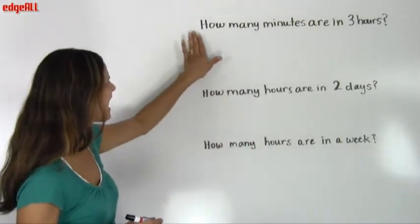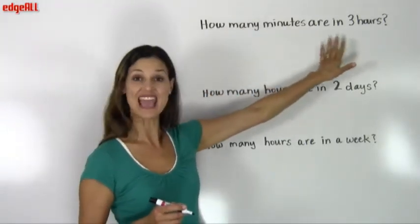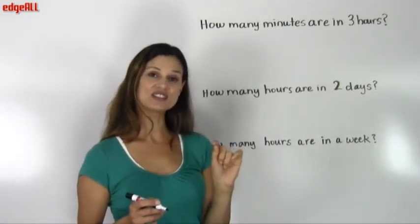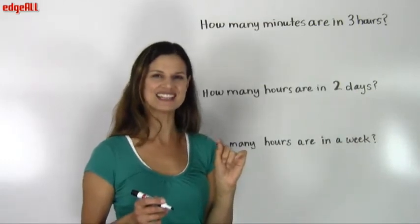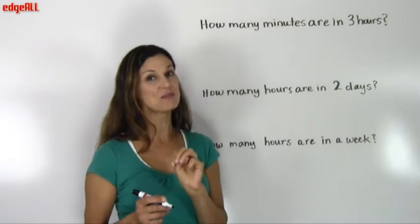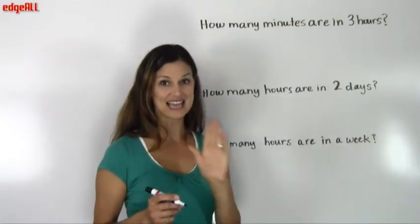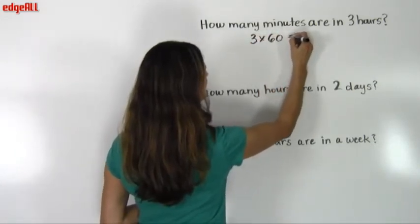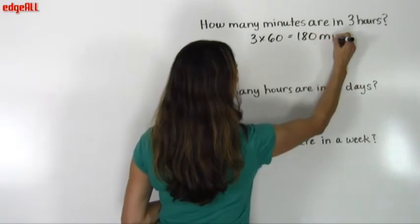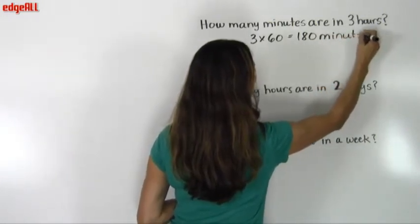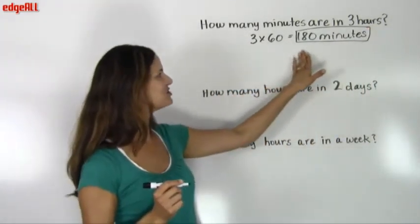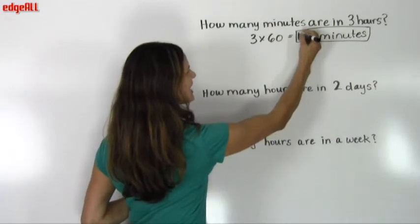In our first example, we are asked: how many minutes are in three hours? We know that in one hour there are sixty minutes. So in order to find out how many minutes there are in three hours, we multiply three times sixty. Three times sixty equals one hundred eighty minutes. There are one hundred eighty minutes in three hours.